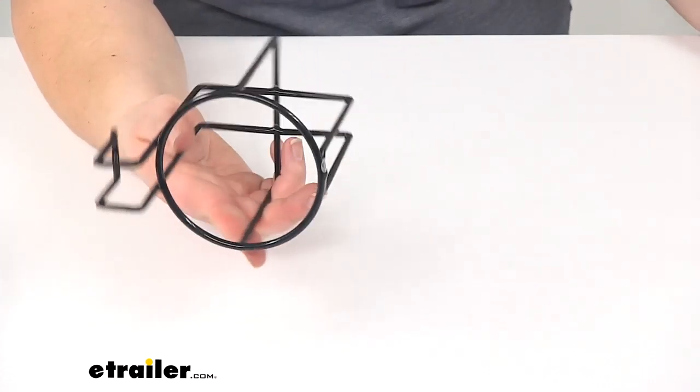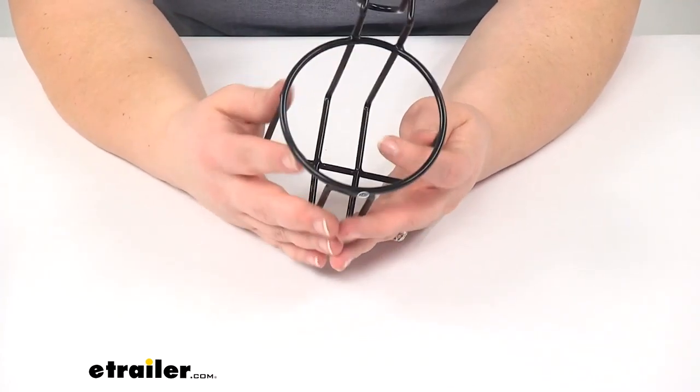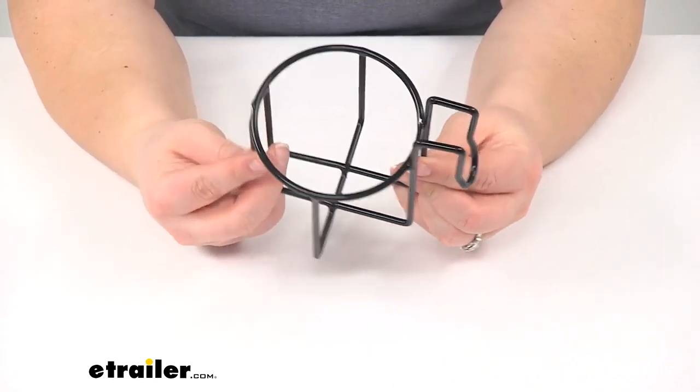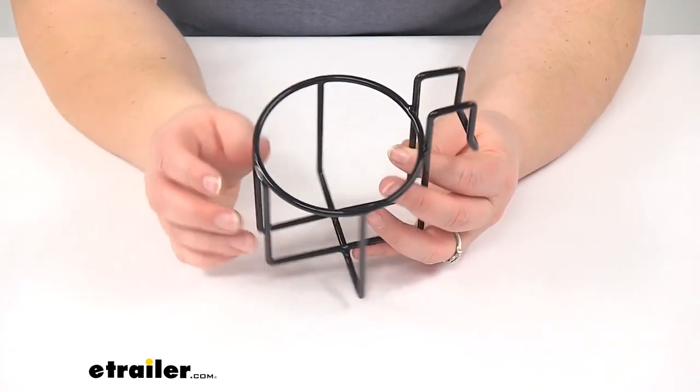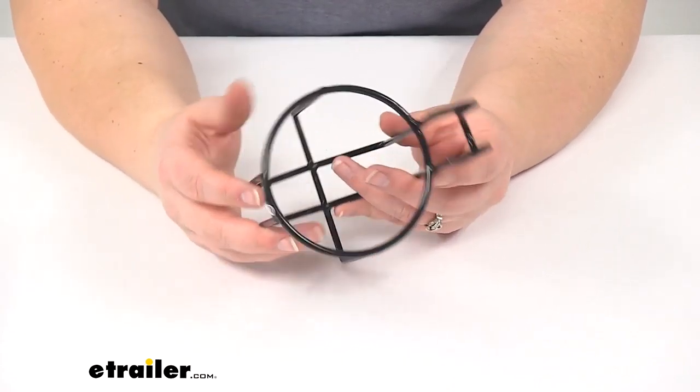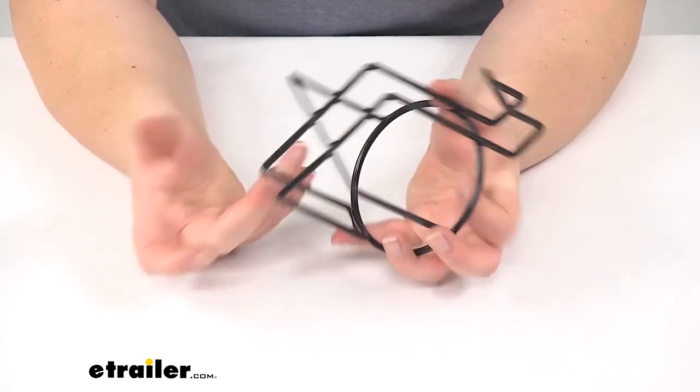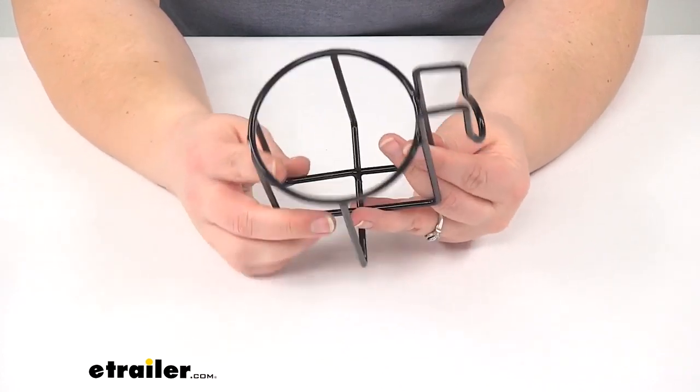The other nice thing about this cup holder is that all our surfaces are covered with a nice plastic dip coating, so we don't have to worry about any paint just flaking off or cracking off of this. It's going to be very durable, resistant to any rust or corrosion, so it's going to last for a nice long time.